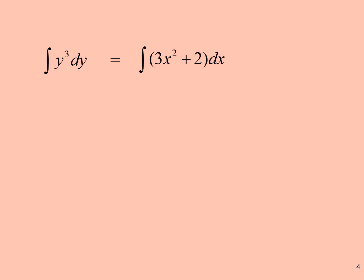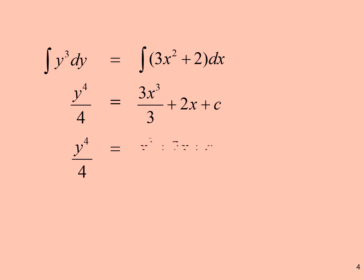We must remember to integrate both sides. Y⁴/4 equals 3x³/3 plus 2x plus C. Simplifying: Y⁴ equals 4(x³ + 2x) plus C.